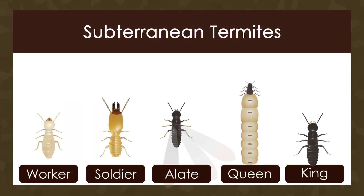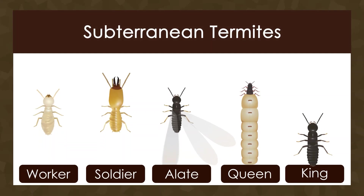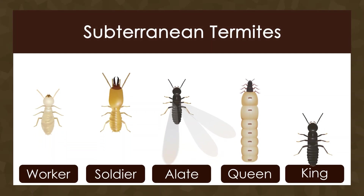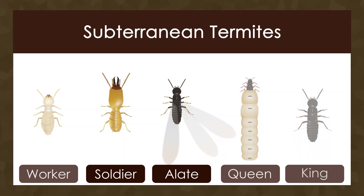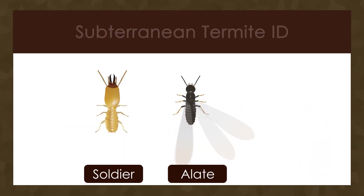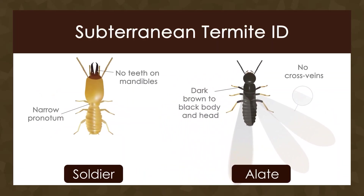The subterranean termite caste consists of worker, soldier, alate, queen, and king. Subterranean soldiers have no teeth on their mandibles and have a narrow pronotum. Subterranean alates have a dark brown to black body and head, and no cross veins on their wings.